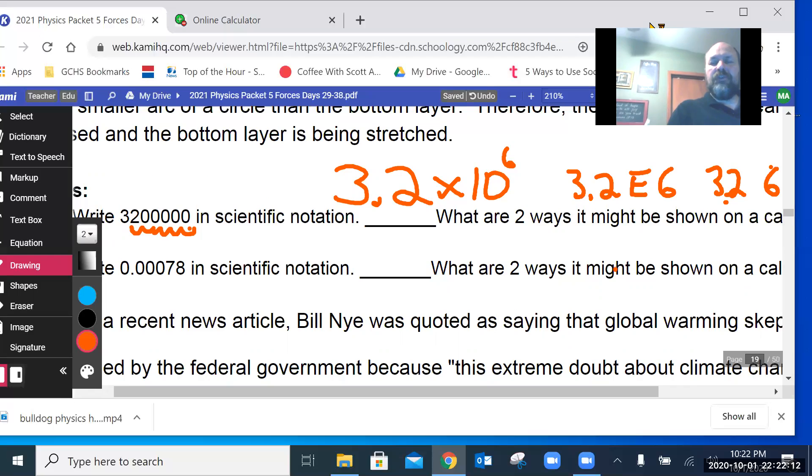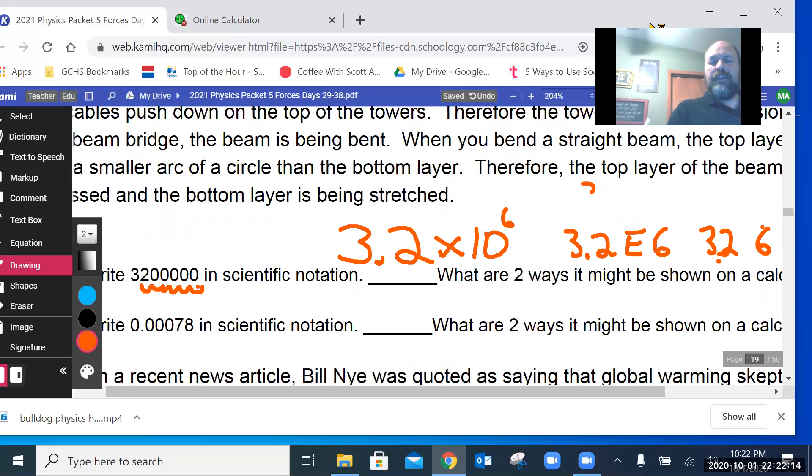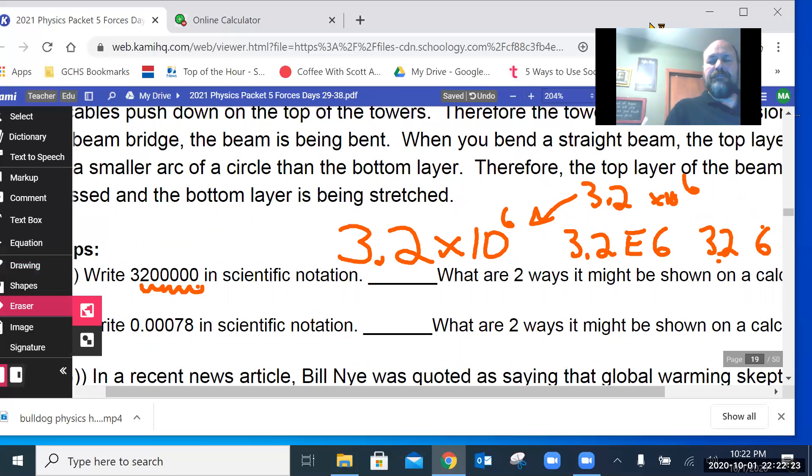Some calculators are really nice for you and they say 3.2 and then there's a little times ten and then there's a six just like the regular scientific notation. But those aren't terribly common calculators.